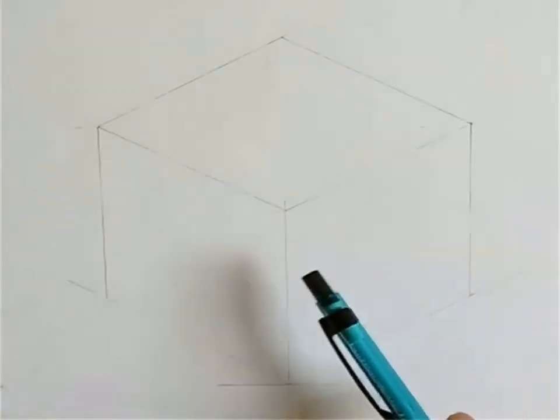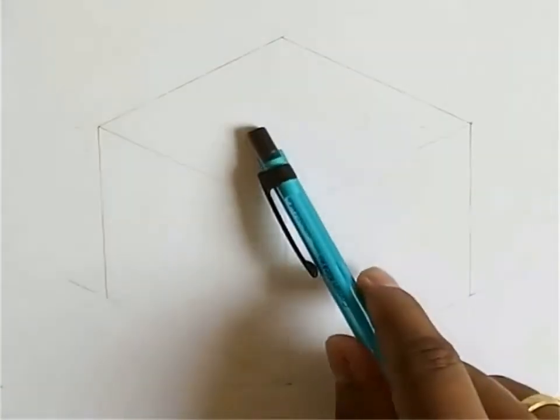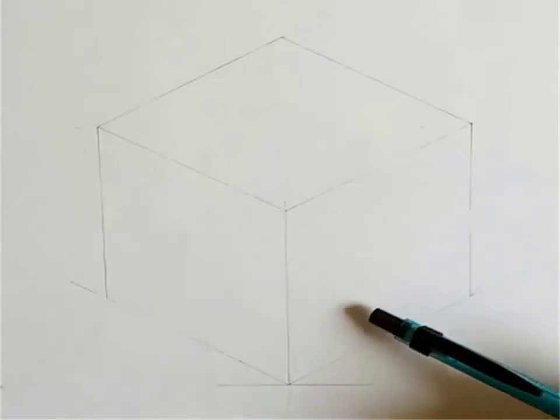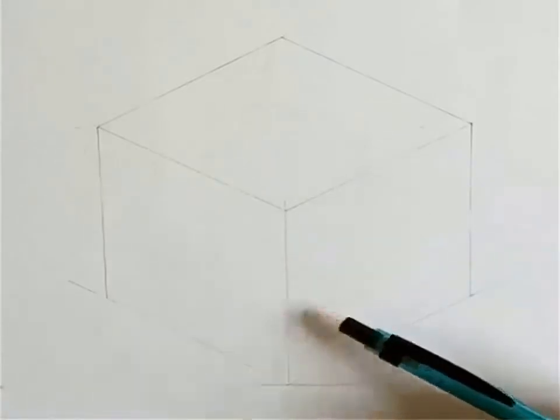It has right vertical surface, left vertical surface and top horizontal surface. On these three surfaces an isometric view can be drawn.